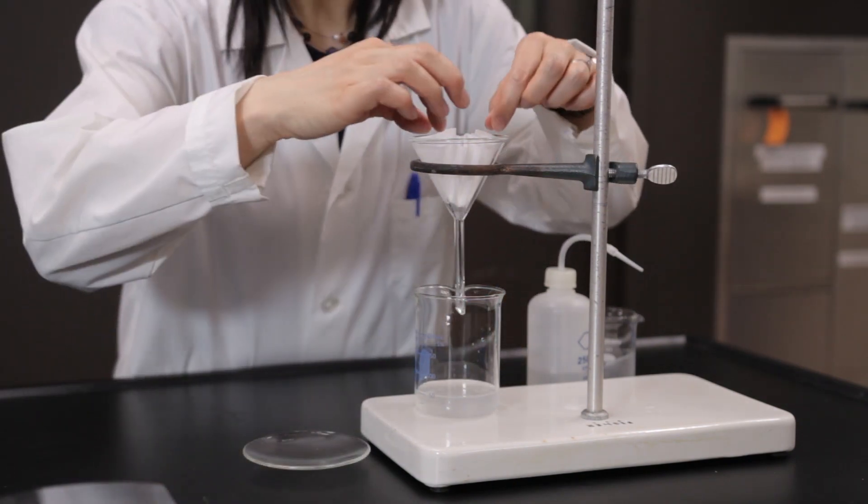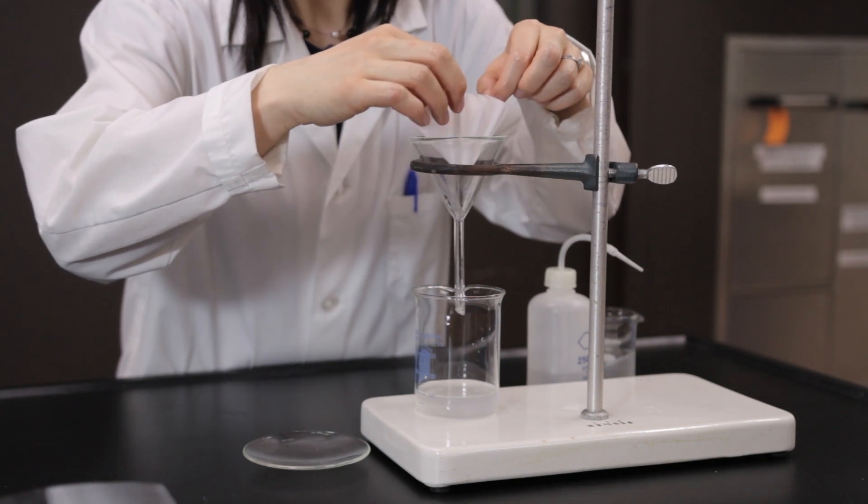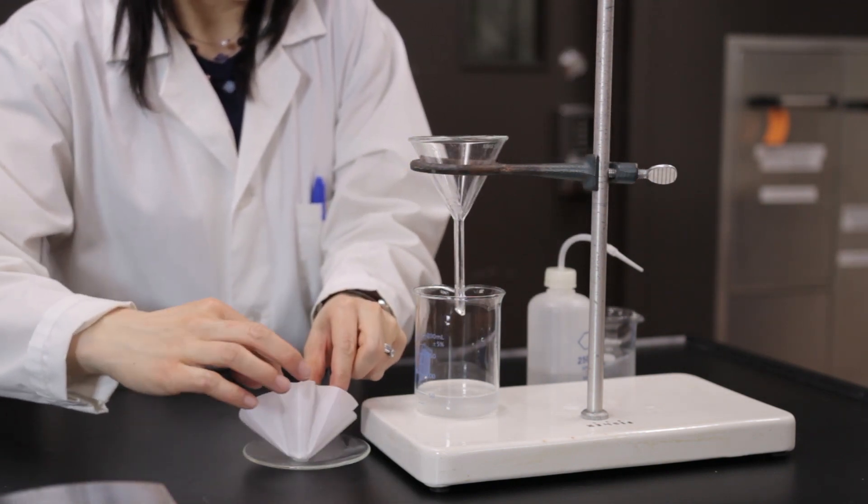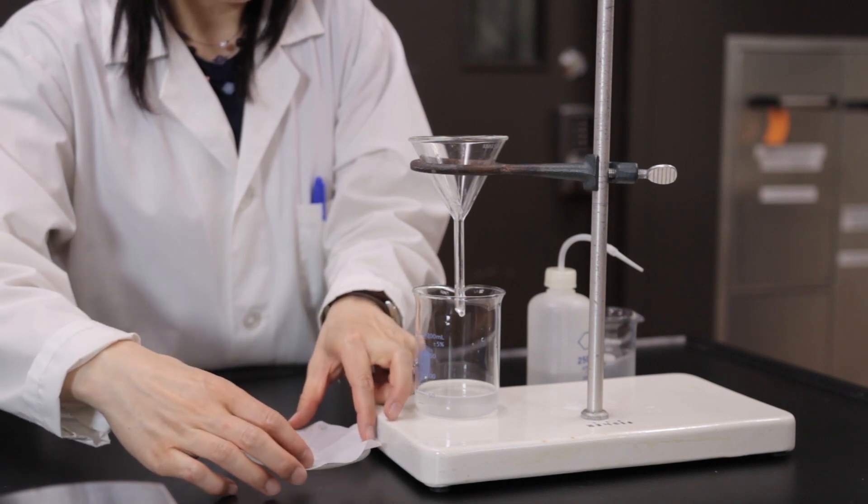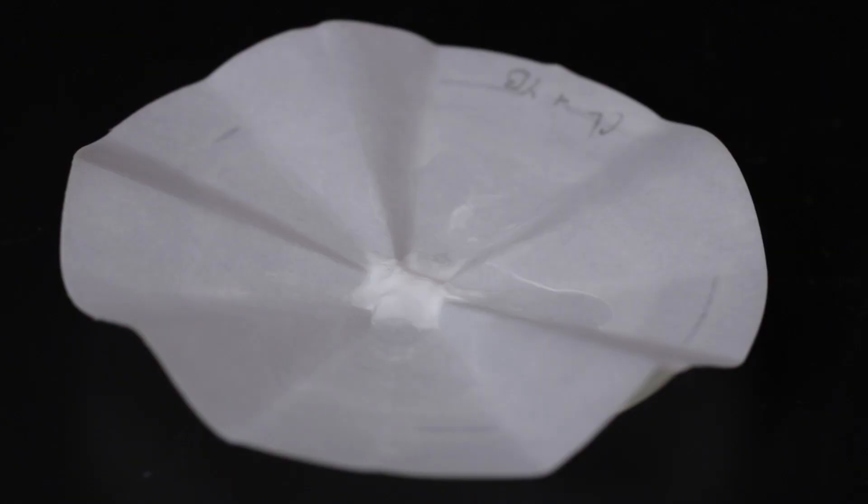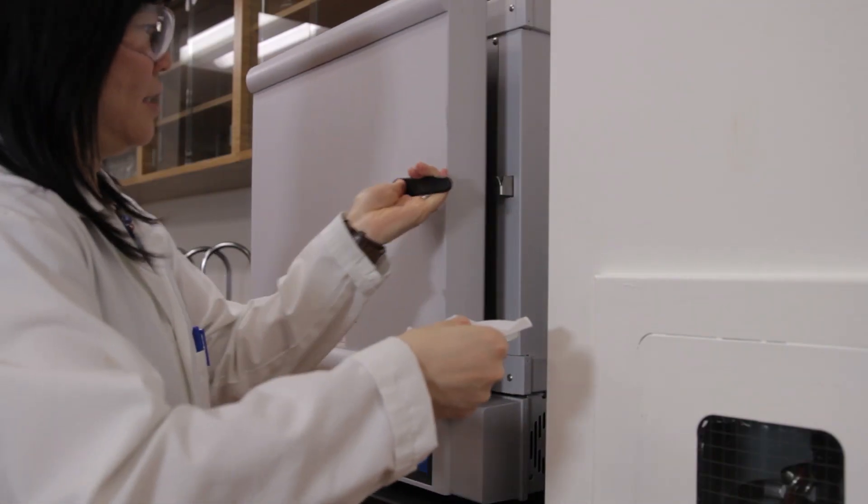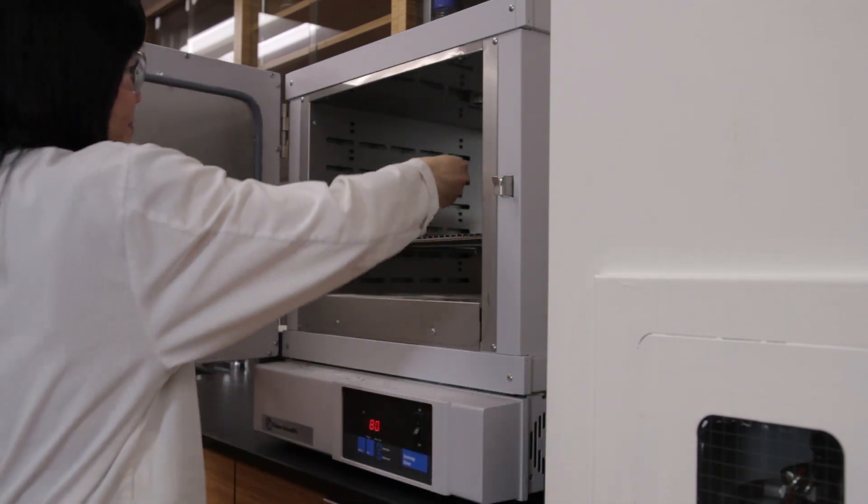Open the filter paper containing the precipitate and place the paper onto the same watch glass that was previously weighed out. Discard the filtrate. Place the filter paper and watch glass in the oven to dry for about 15 minutes.